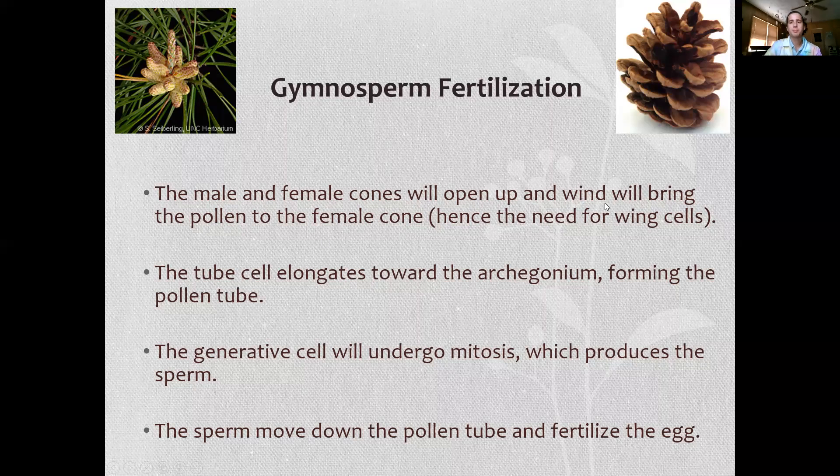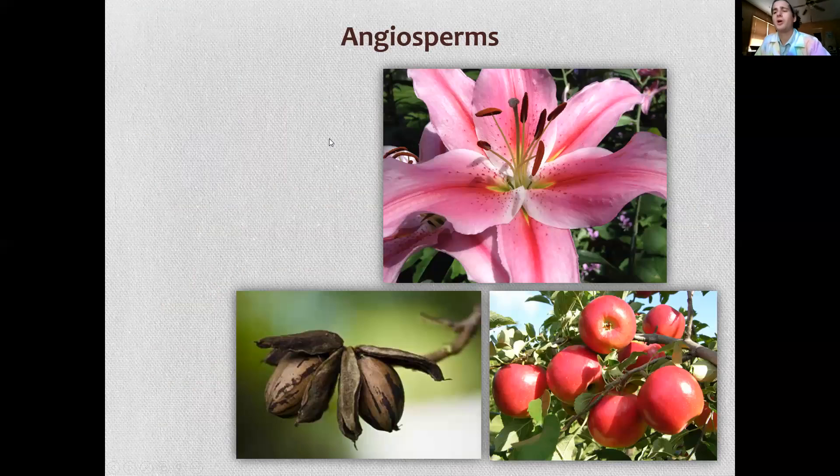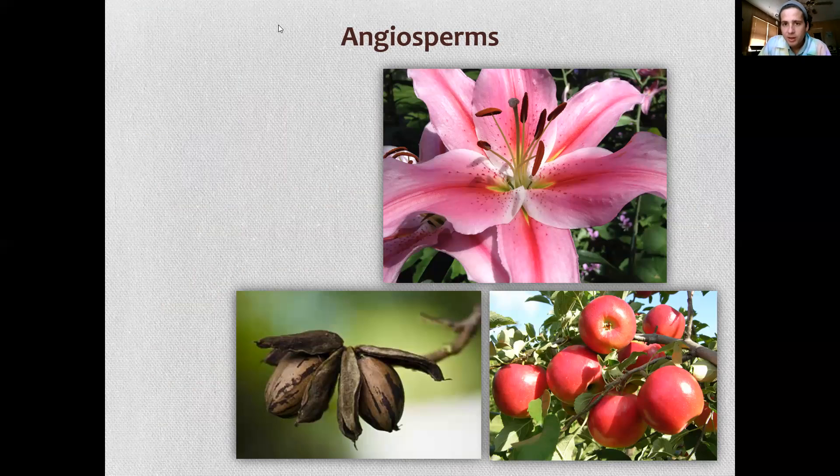So wind will bring the pollen to the female cone—that's why they need wing cells. It forms a pollen tube. The generative cell will undergo mitosis, producing sperm which go down the pollen tube like a little slide all the way down to the egg and fertilize it. And that was all for gymnosperms. So come back to the next video for angiosperms. Thank you.